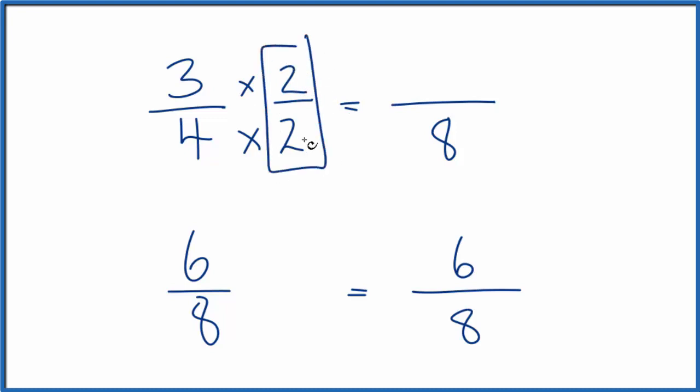We have to multiply both the top and bottom by two. That's because two over two, two divided by two is one. So we're just multiplying three-fourths by one. We get three times two is six over eight.